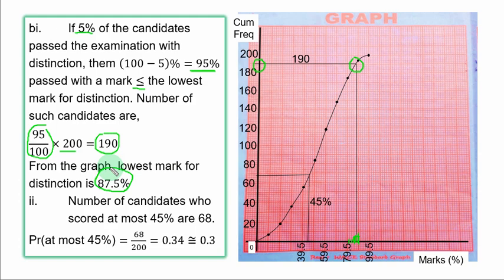For part C, the number of candidates who scored at most 45% is 68. If you count from 39.5, 45 is here. Trace to the curve and to the vertical axis, you have 68. The probability at most 45% equals 68 over 200, which is 0.34, or 0.3 to one decimal place.